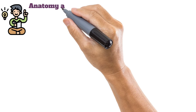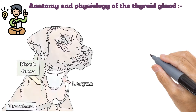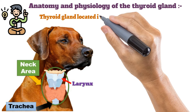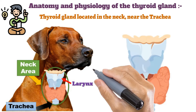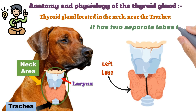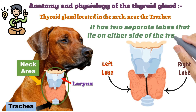Before going ahead, let's learn the anatomy and physiology of the thyroid gland. The thyroid gland is located in the neck near the trachea and has two separate lobes that lie on either side of the trachea, as seen in the picture.